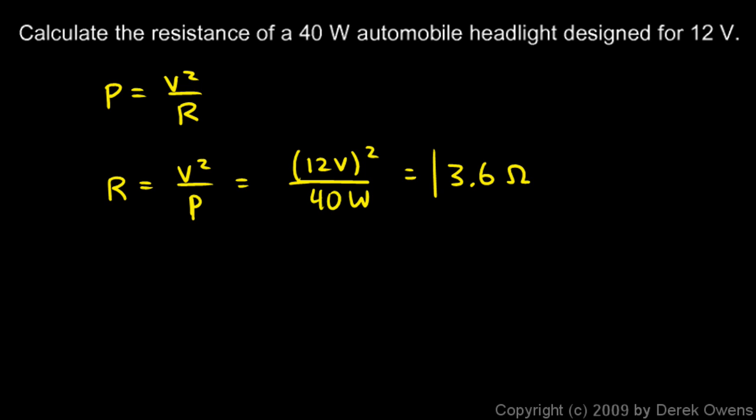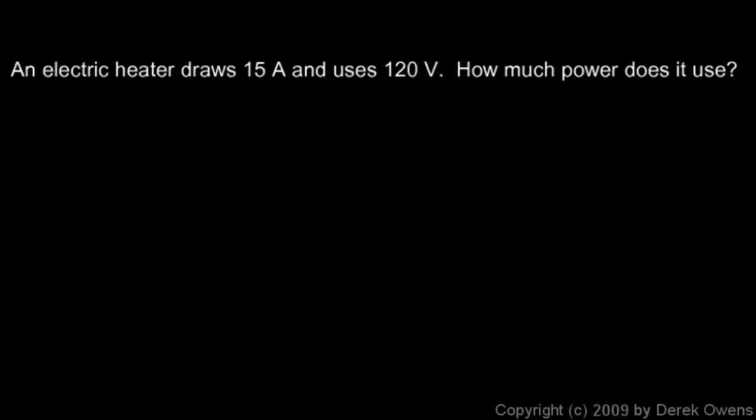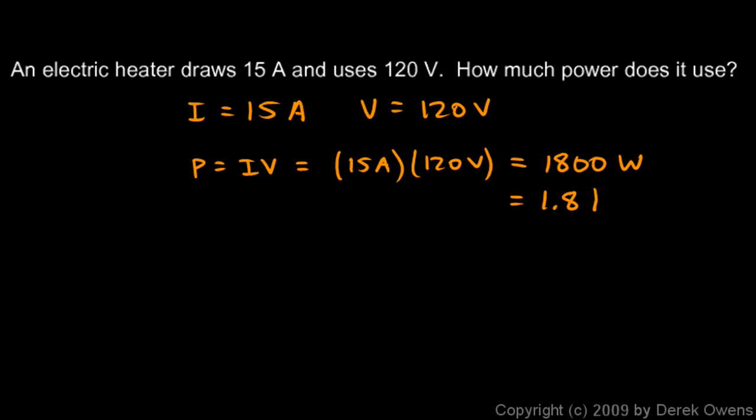Here's another example: an electric heater draws 15 amps, so that 15 amps is the current I, and it uses 120 volts, so that's the voltage V. How much power does it use? Well if we're given I and V we can calculate the power using the formula P equals IV. So we just do 15 amps times 120 volts. It's that simple. That comes out to 1800 watts, or we might write it as 1.8 kilowatts. Not too bad.